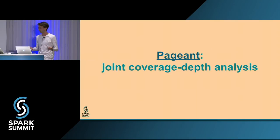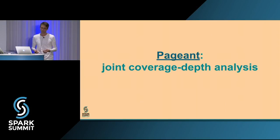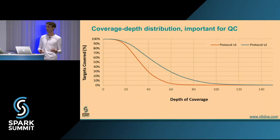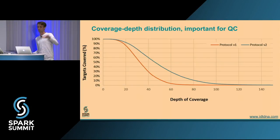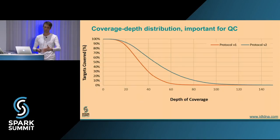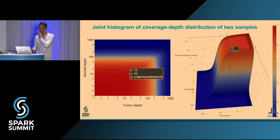The second repository is called Pageant. It does a QC analysis called joint coverage depth analysis. The problem: for any given genome sequencing, we want to know how much of the genome — or a specific subset — was covered at a given depth. We might have two samples with independent coverage histograms, but we want the joint distribution: how many loci have at least 10x coverage in the normal and 15x in the tumor, because that gives a certain statistical power for our analysis. The output is an interactive 3D plot generated with Plotly, which gives beautiful interactive visualizations in the browser.